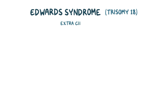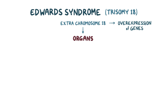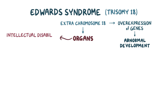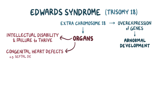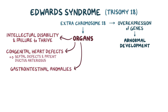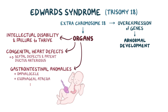Having an extra chromosome 18, not surprisingly, has an effect on almost every organ system in the body. This extra chromosome leads to overexpression of the genes on that chromosome, which causes abnormal development of all types of cells. Babies with Edwards syndrome have severe intellectual disability and failure to thrive. Almost all will have a congenital heart defect like septal defects or patent ductus arteriosus. Common gastrointestinal anomalies include omphalocele, which is when some of the bowels herniate out into the umbilical cord, and esophageal atresia, where the esophagus ends in a blind-ended pouch instead of continuing to the stomach.